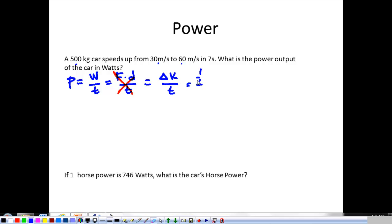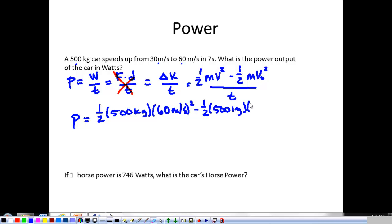Or, one-half mv squared minus one-half mv initial squared all over the time. So, I'm going to plug in some numbers. So the power is one-half times 500 kilograms times 60 meters per second squared minus one-half times 500 kilograms times 30 meters per second, and that whole quantity is squared, divided by 7 seconds. And when you plug all that into your calculator, you end up with a large number. 96,429 watts.